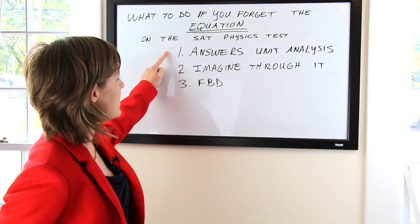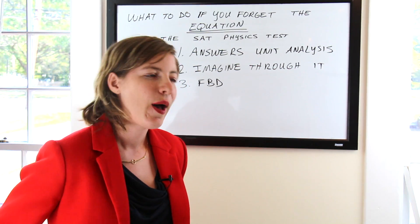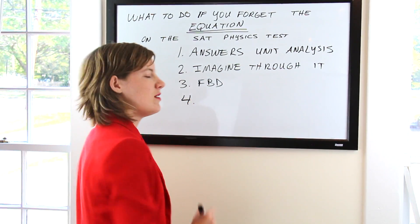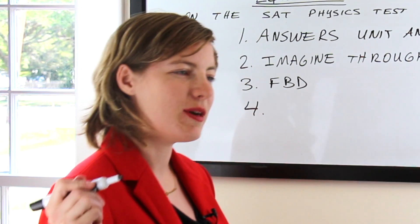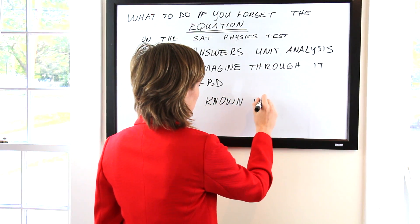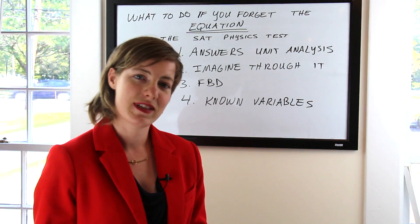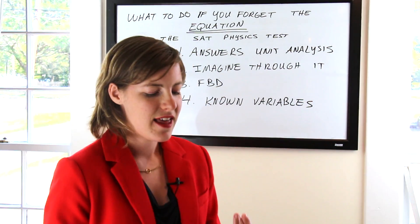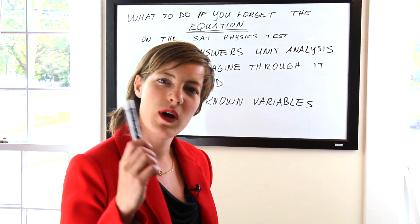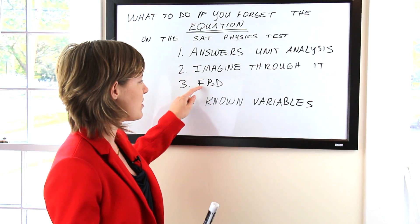So once you have the answer choices unit analysis, imagining through it, and the free body diagram, you're probably going to know what that equation is already. But let's say, worst case scenario, we're going to do the physicist problem. We're going to imagine through it using the variables that we do know, so known variables. And I'll give you a hint. This is sometimes how physicists derive their equations. They know that it has to have mass, they know that it has to have temperature, they know that it has to have some other variable and some other variable in it, and they want to know what the relationship is. So they put those together. They do their unit analysis. They imagine through it. They use their free body diagrams.